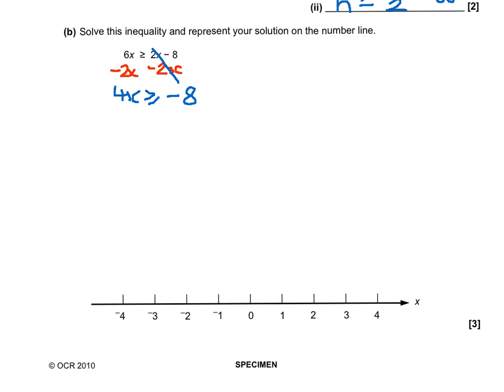Now, to get rid of this 4, just like we did before, we need to divide by the number in front of x. We'll divide by 4. That now leaves us with x, the symbol, and then minus 2.